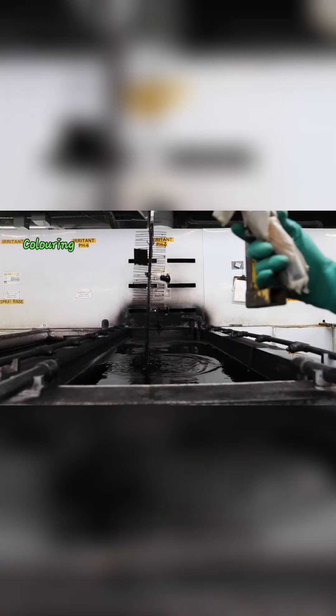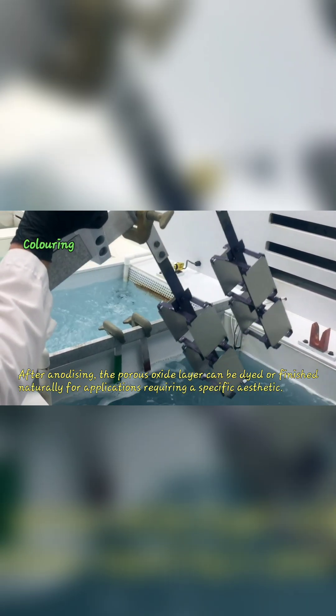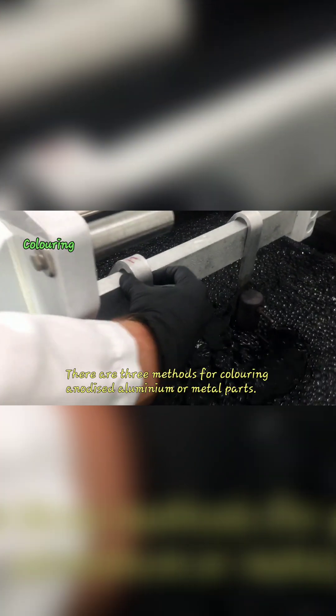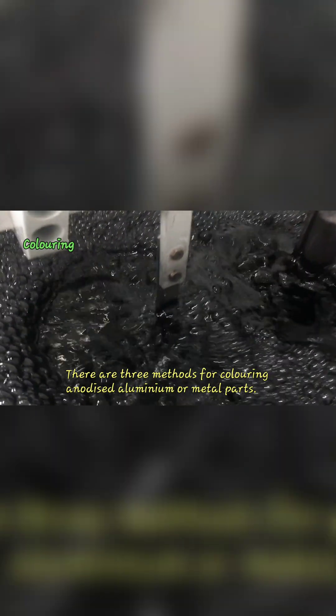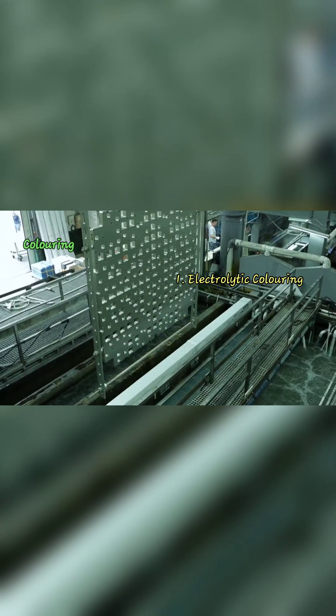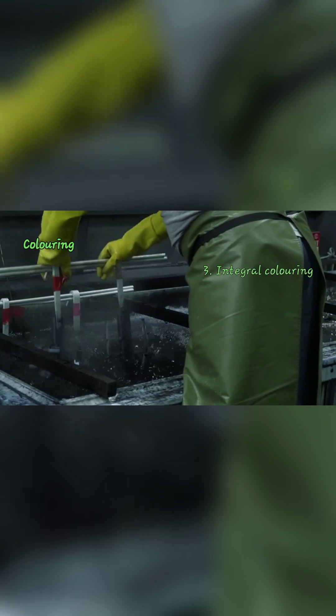Coloring. After anodizing, the porous oxide layer can be dyed or finished naturally for applications requiring a specific aesthetic. There are three methods for coloring anodized aluminium or metal parts: 1. Electrolytic coloring. 2. Dip coloring. 3. Integral coloring.